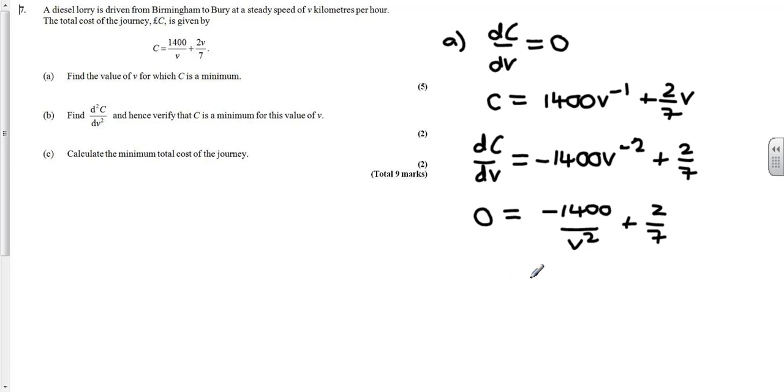If I just add on this term to both sides, you can rearrange it into this form. And by multiplying both sides by v squared and both sides by 7, and then dividing by 2, what you should come out with is that essentially v squared is equal to 4900. Feel free to pause, take a few steps, and figure out why.